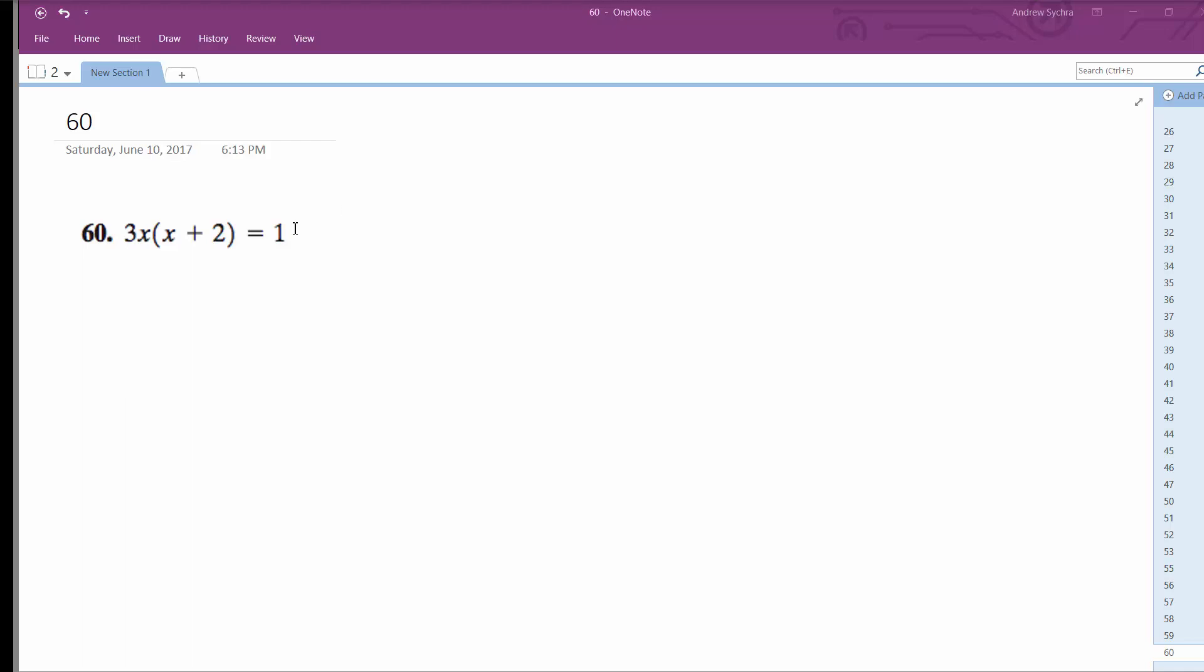I'm going to solve this problem using the quadratic formula. First, I'll distribute the 3x, so I get 3x² + 6x, and I'm going to move the 1 over, so I get -1 = 0.